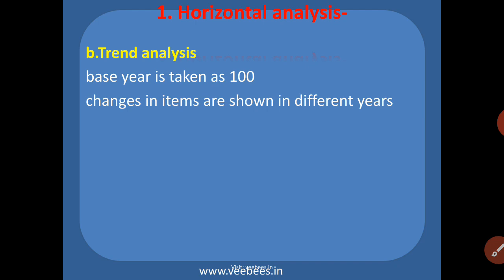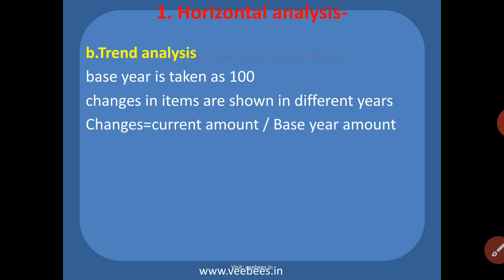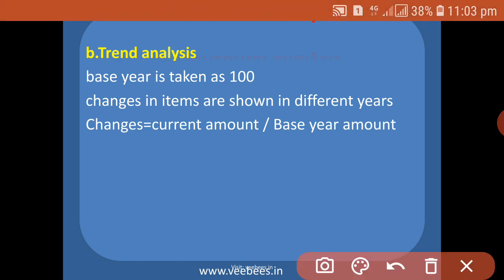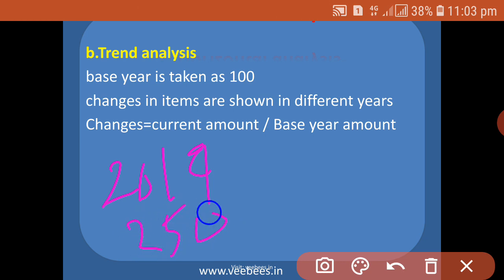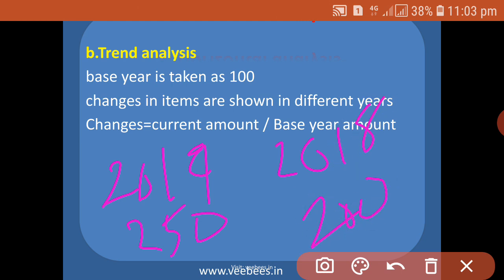For example, if you are preparing the statement for 2018 and 2019, then 2018 (the first year) is taken as the base year, and all figures of 2018 are taken as 100. Changes in items are shown in different years. We find the changes using the equation: current year amount divided by base year amount. For example, if in 2019 the data is 250 and in 2018 the data is 200...